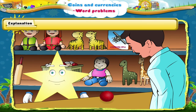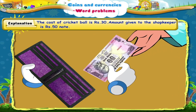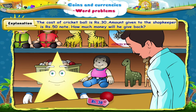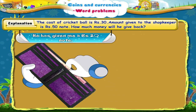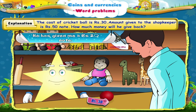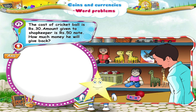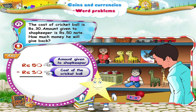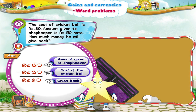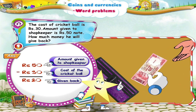Here we are at the toy shop. The cost of this cricket ball is rupees 30. Starry, I will give the shopkeeper a rupees 50 note. Do you know how much money he will return to me? He has given me a rupees 20 note back. Now let me explain how. From the amount that we gave the shopkeeper, we subtract the cost of the cricket ball. So, from rupees 50, we subtract rupees 30 to get rupees 20. That is why the shopkeeper returned this rupees 20 note to us.